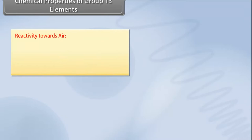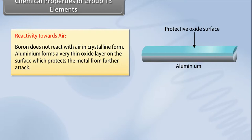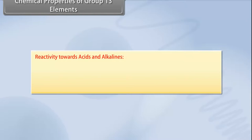Reactivity towards air: Boron does not react with air in crystalline form. Aluminium forms a very thin oxide layer on the surface which protects the metal from further attack. Amorphous boron and aluminium metal on heating in air form B₂O₃ and Al₂O₃. With dinitrogen at high temperature, they form nitrides.